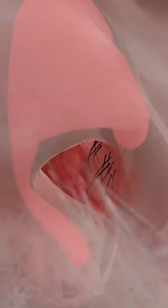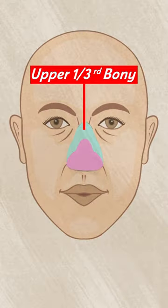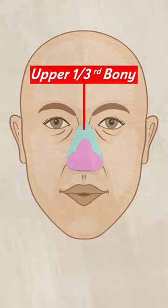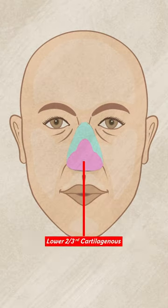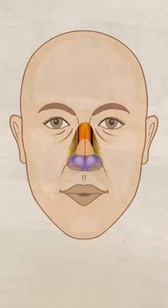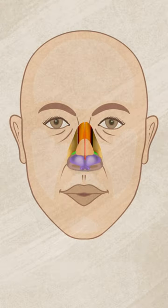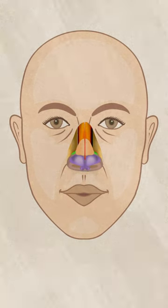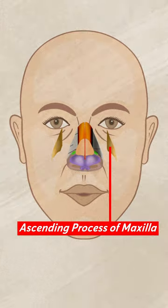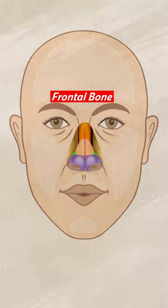The anatomy of the external nose is divided basically into two parts. We have an upper one third which is formed by a bony part, and the lower two thirds which is formed by a cartilaginous part. The upper one third is formed by the nasal bones, which are paired bones. Along with that there is another paired bone — the ascending process of maxilla — and the unpaired bone is the frontal bone.